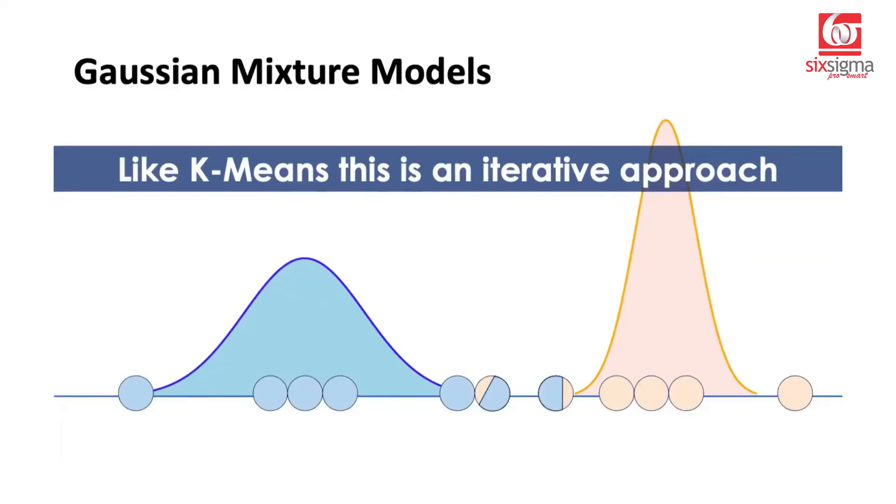The moment we go to multi-dimensional space, we will no longer have just one mean value. We'll have a mean vector. Likewise, we'll not just have one variance. We will have a variance-covariance matrix, which means there will be much more complicated calculations there. But the basic idea stays the same. That's why we tried to understand it with the help of one-dimensional examples.